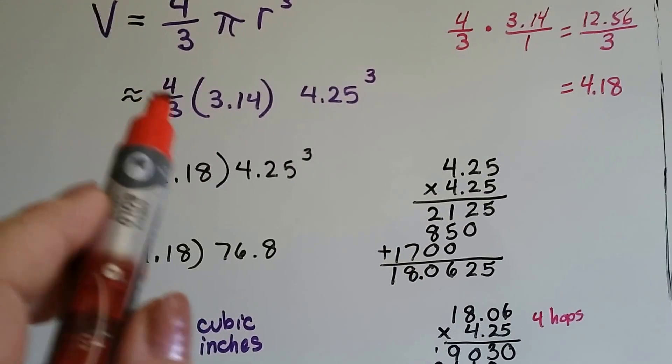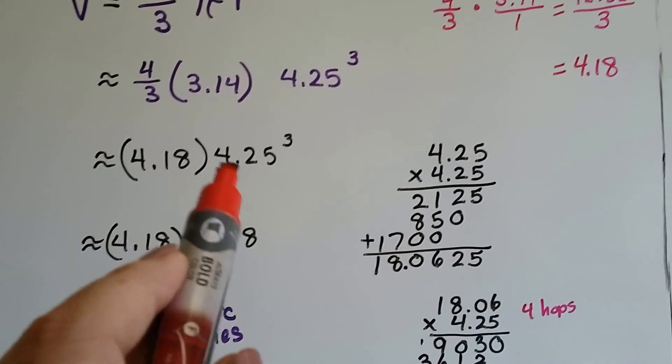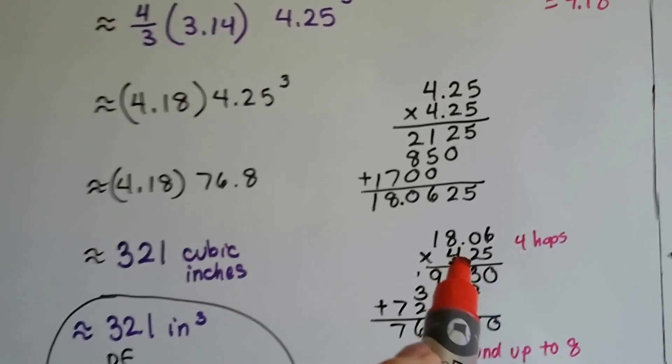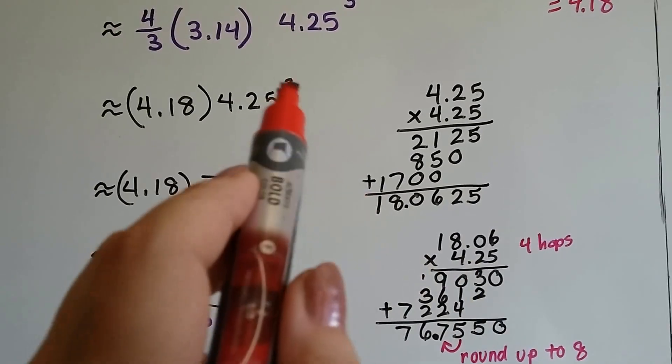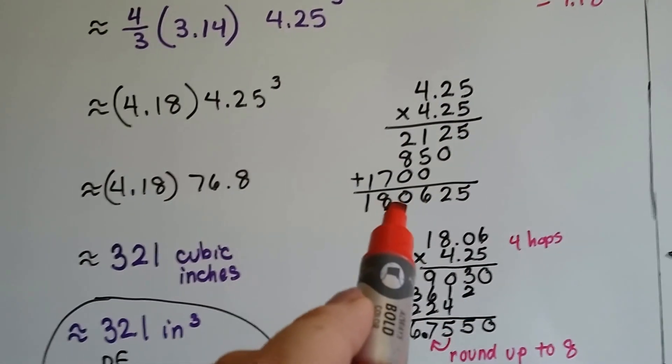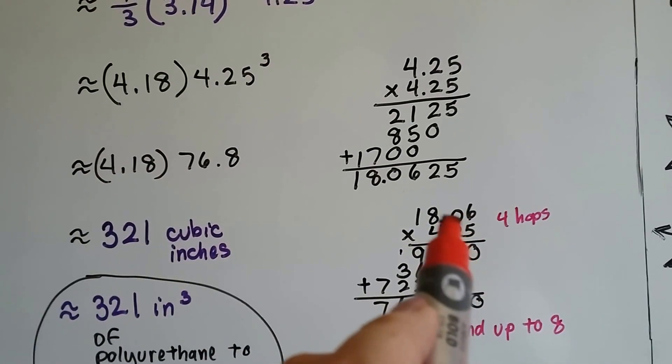We know that 4/3 times π is 4.18. Now we need to multiply 4.25 by 4.25, get a product, and then multiply that by 4.25 to get it cubed. To itself, it came out as 18.0625. I rounded that off to .06.